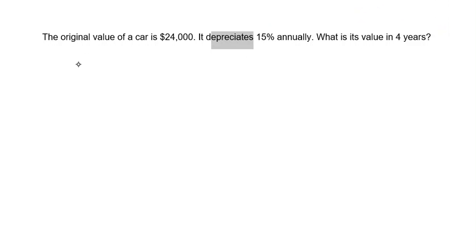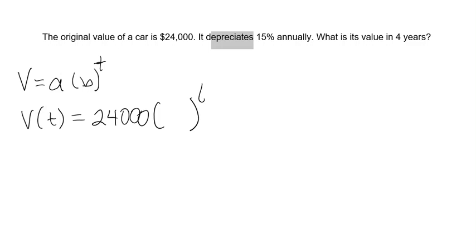Our general format of an exponential function is A, our starting value, times B, our base, to the T, our time power. And that's what we're going to use to get our value, our ending value of the car. So our value based on T number of years is going to be equivalent to our starting value, $24,000, times our base to the T power.